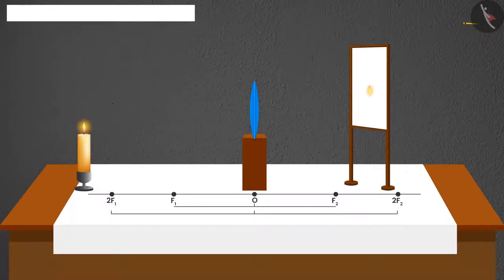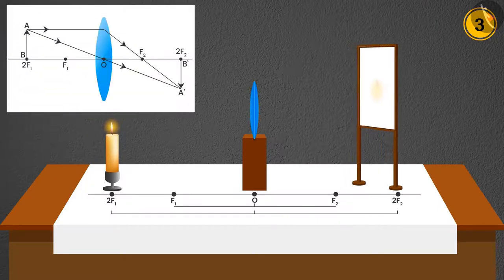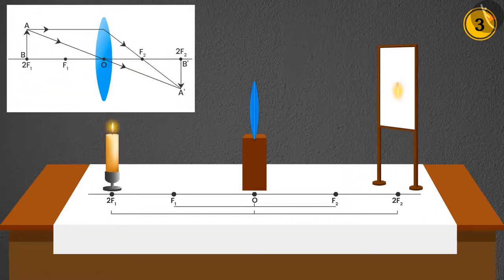Case 3: If the candle is placed at 2F1, then the image will be formed at 2F2. But its size will be the same as the size of the candle as well as the nature will be real and inverted.